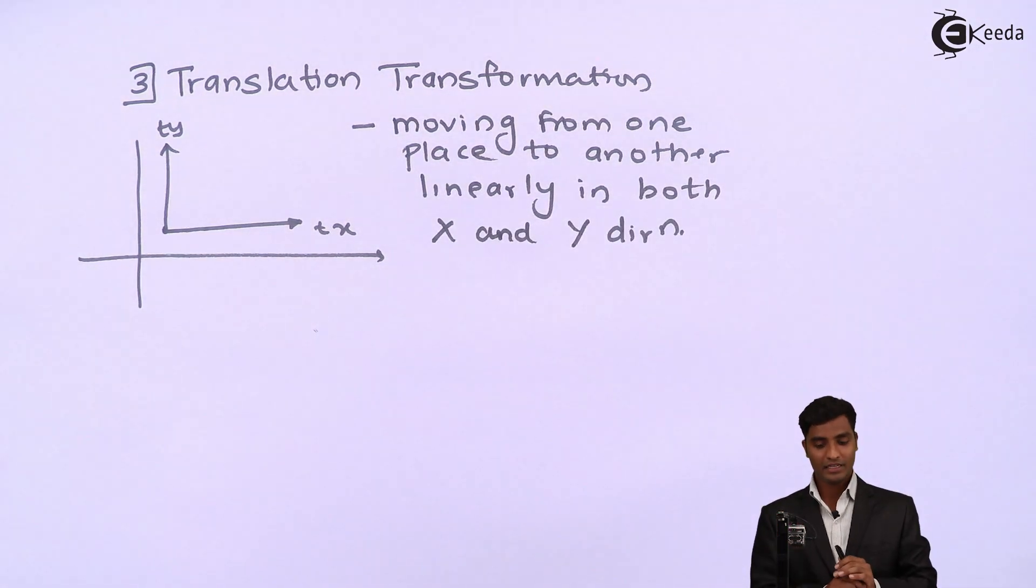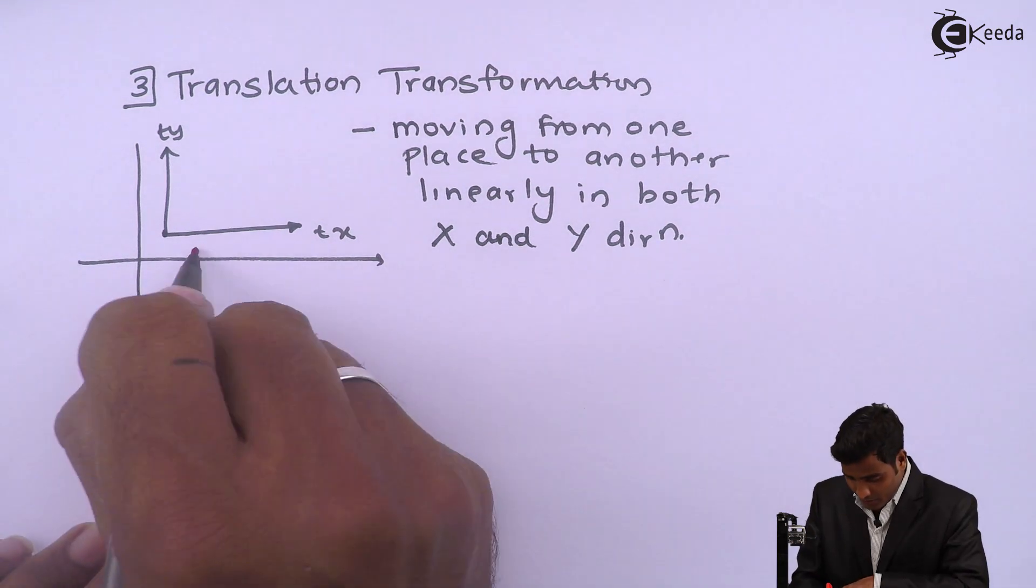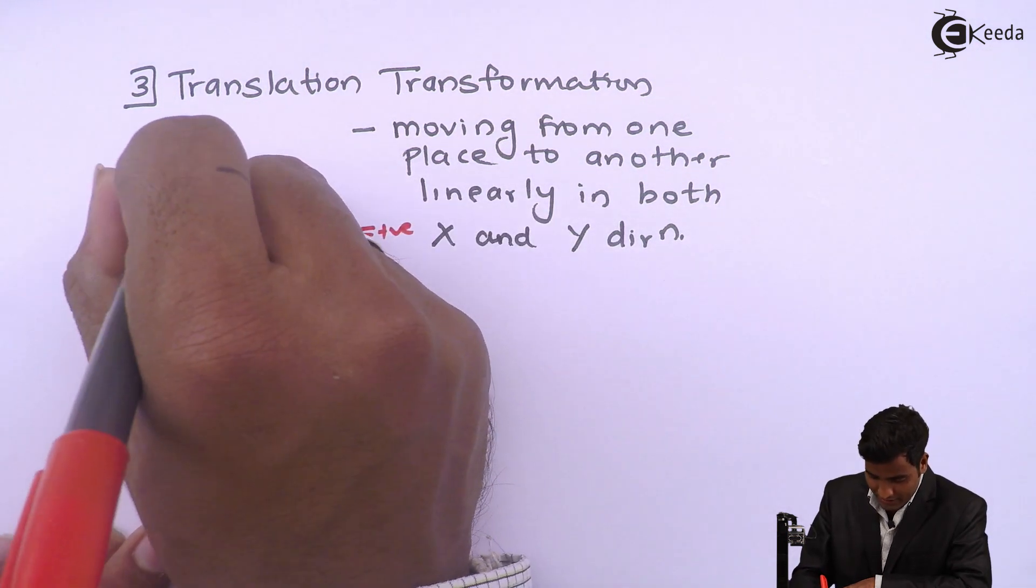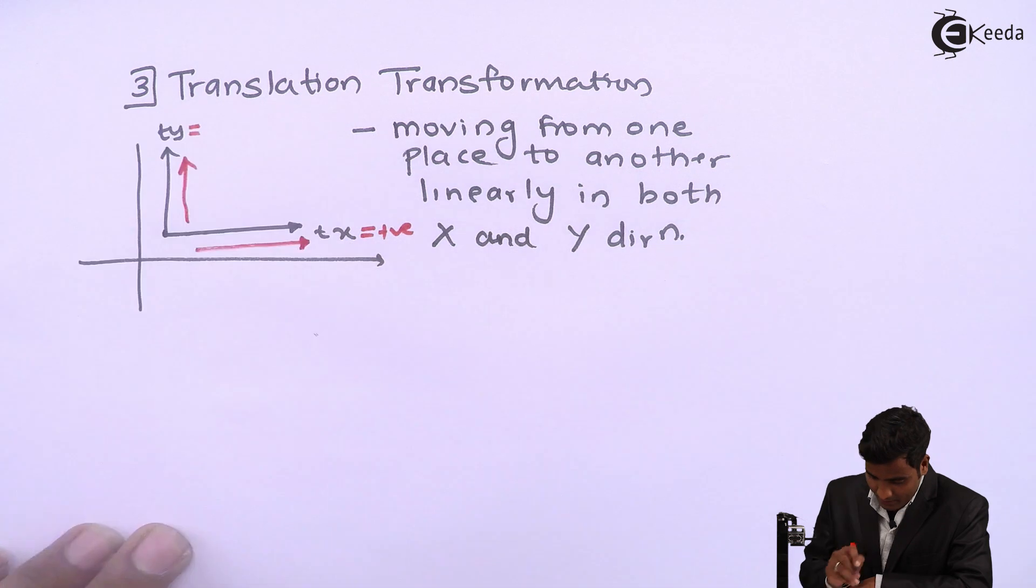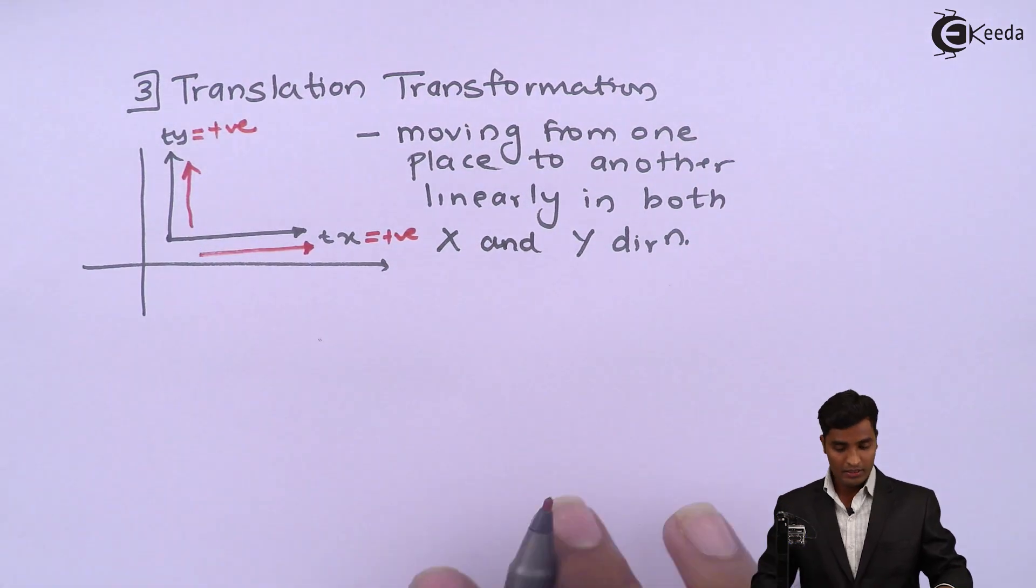Sign convention: if we are moving in positive direction then Tx is taken as positive. If we are moving in this direction then Ty is taken as positive. So this sign convention we have to keep in mind.